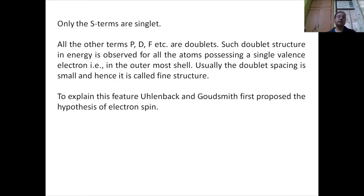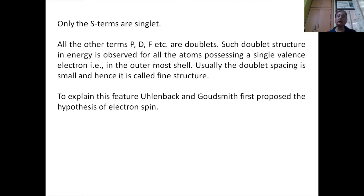Only the S terms are singlet in general. Even S terms have the property of being doublet, but they do not show it in general — they show doublet character only when exposed in a weak magnetic field. All other terms — P, D, F — are all doublets. Such doublet structure in energy is observed for all atoms possessing a single valence electron in the outermost shell. The doublet spacing is small, and hence it is called the fine structure.